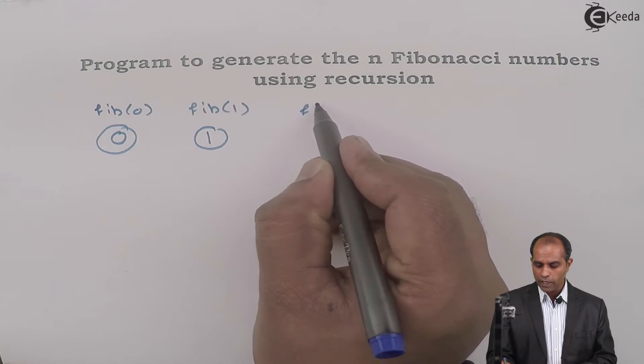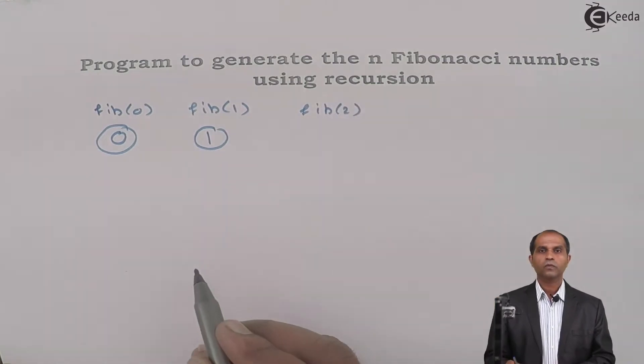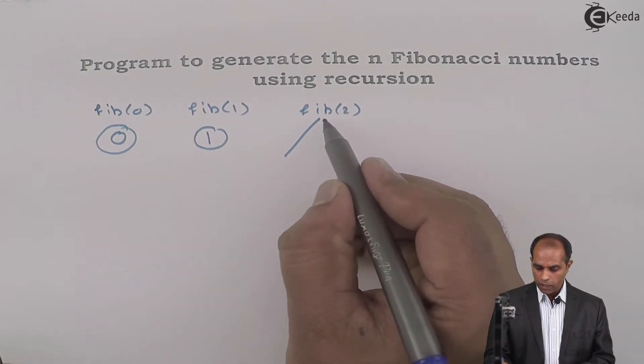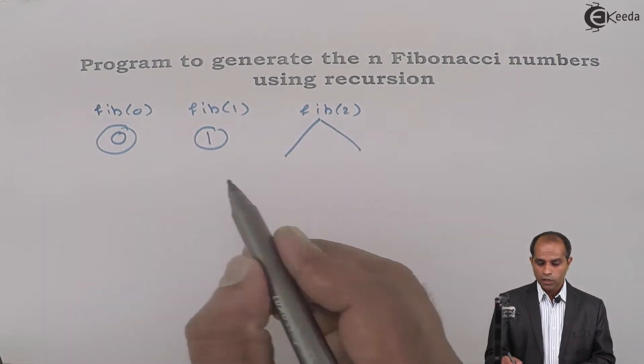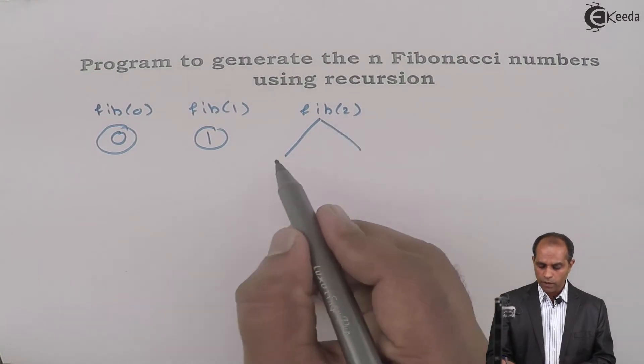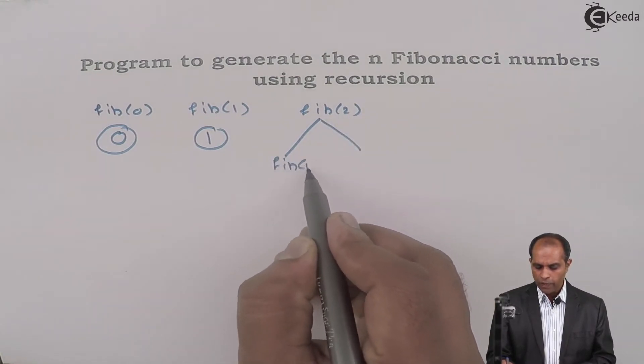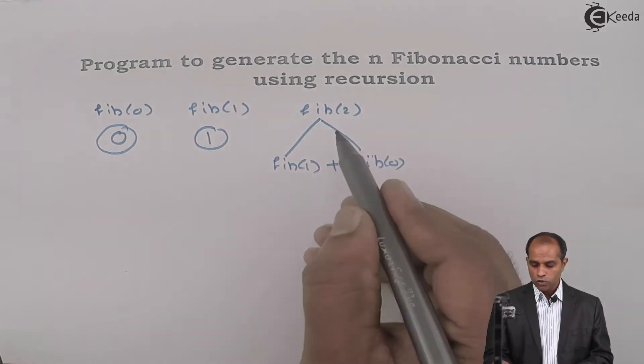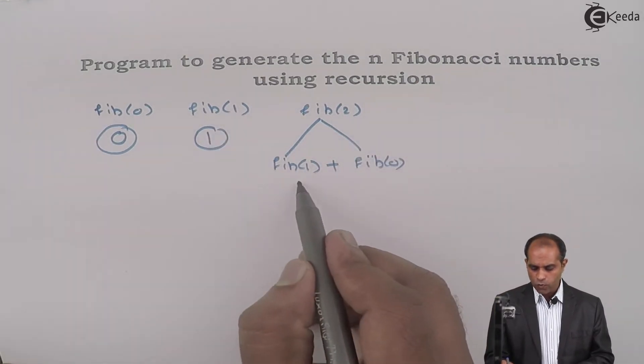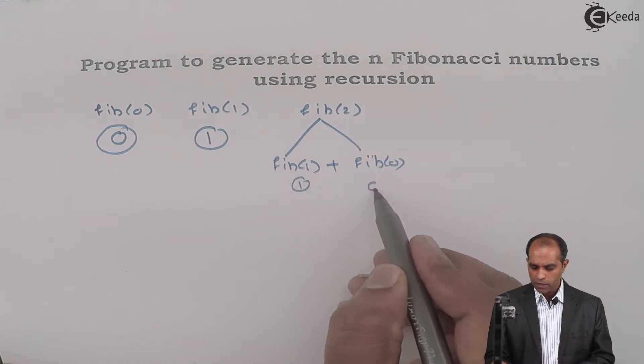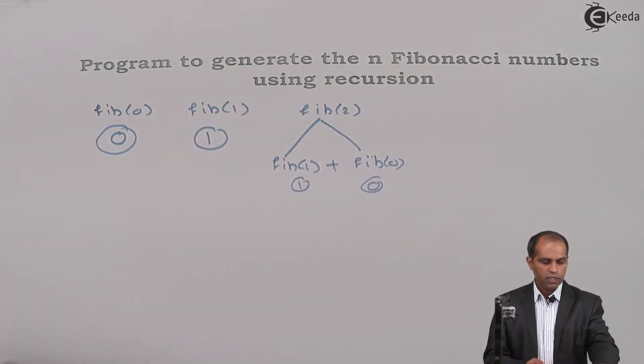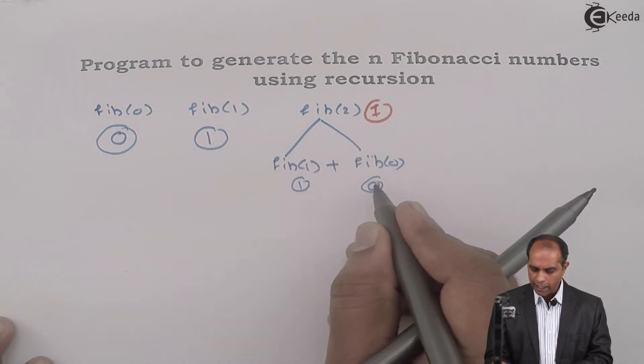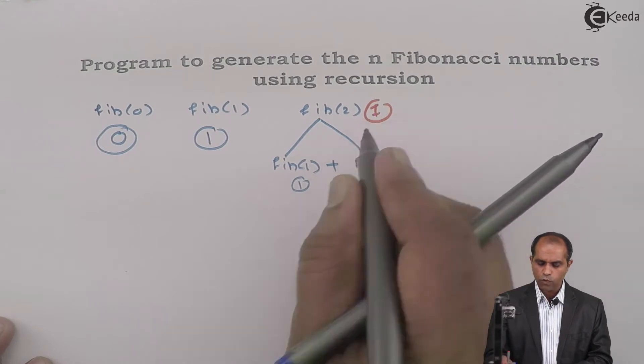What if I ask you to find Fib of 2? You should immediately say that I don't know what is Fib of 2. But if someone can get me to this particular level, when 2 is given, I'll ask someone to find Fib of 1 plus Fib of 0. So Fib of 1 is 1 plus 0, that is 1. We return the value as 1 for this case.